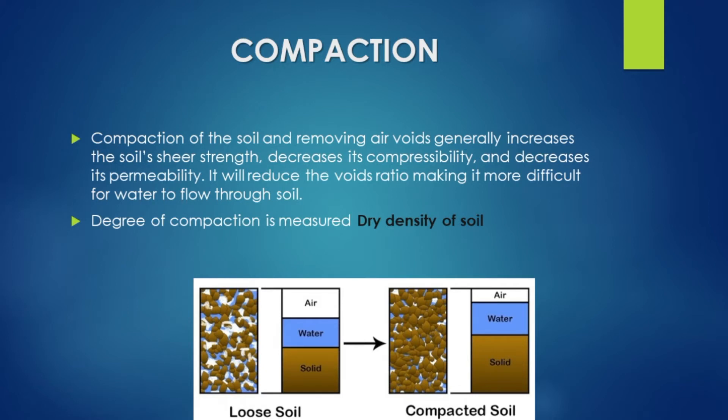Compaction will reduce the volume of the soil. In the soil, it will reduce the permeability. The amount of water in the soil is reduced, and it reduces the compressibility.